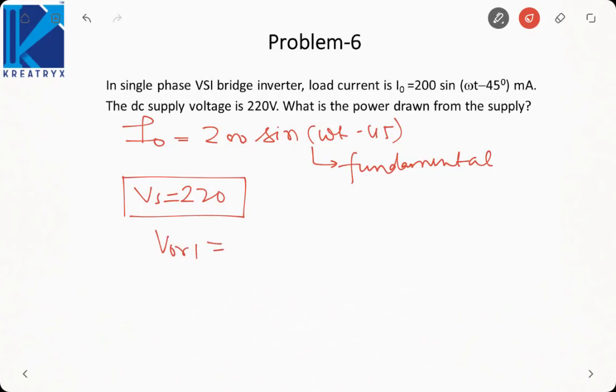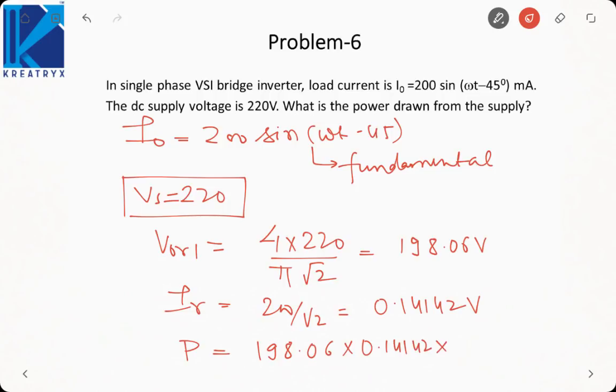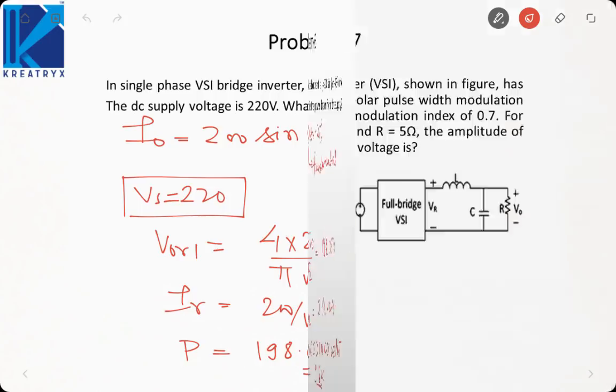Let us first find V0 RMS1. It is a single phase VSI bridge inverter. So it will be 4 into 220 by pi root 2, that is 880 by pi divided by root 2. 4 Vs by n pi, so it will come out to be 198.06 volt. What is IRMS1? It will be 200 upon root 2, that will become 200 by root 2, 141.42, and it is in milliampere, 0.14142. So what will be the power? It will be VRMS times IRMS cos phi, 198.06 times 0.14142, cos phi will be cos 45. It will come out to be 19.8 watt. So that is the power drawn from the supply.